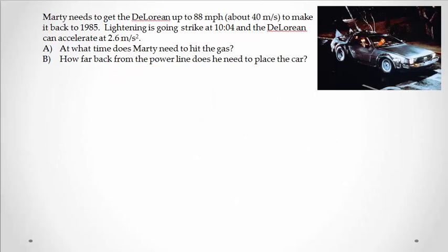Alright, let's do one more example. Marty needs to get the DeLorean up to 88 miles per hour, going the other way dividing by 2.24 gives you pretty close to 40 meters per second. In order to make it back to 1985, for those of you who don't know, this is a movie reference here. Good old classic movie, you should go watch it if you've never seen it, Back to the Future. Lightning is going to strike the clock tower at 10:04.